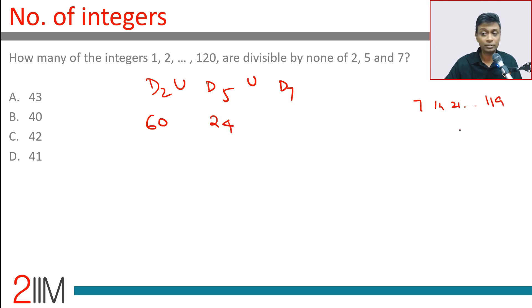Now we want to find A union B union C. We need to subtract the intersection. Numbers divisible by both 2 and 5, which is 10. Numbers with 2 and 7, which is 14. Numbers with 5 and 7, which is 35.